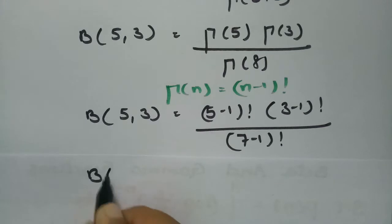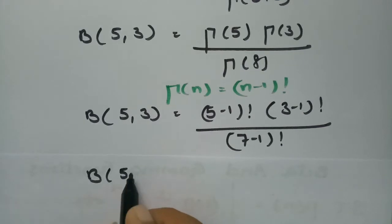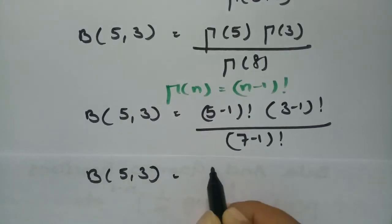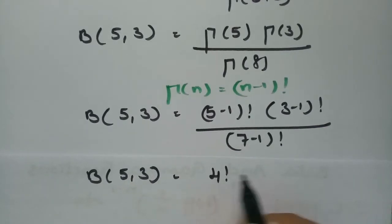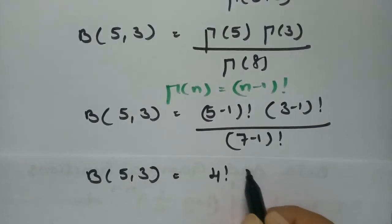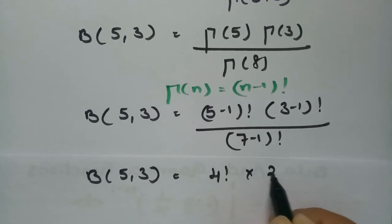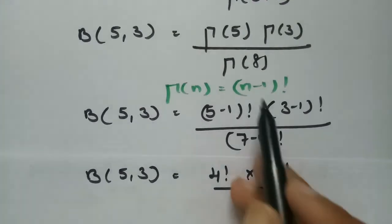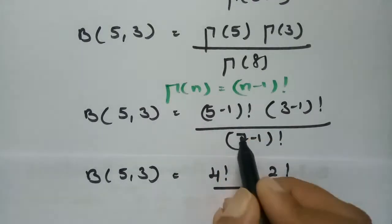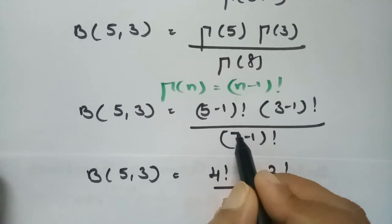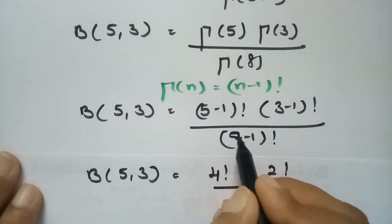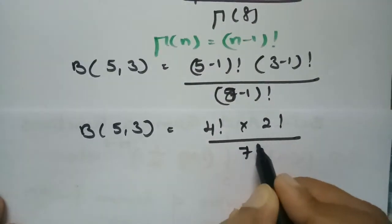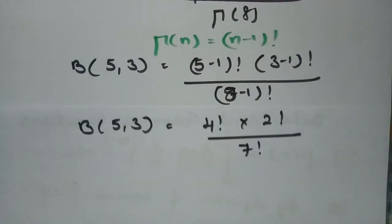Therefore beta of 5 comma 3 is nothing but 4 factorial into 2 factorial divided by 8 minus 1 factorial, which is 7 factorial.